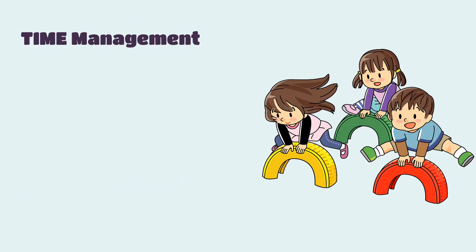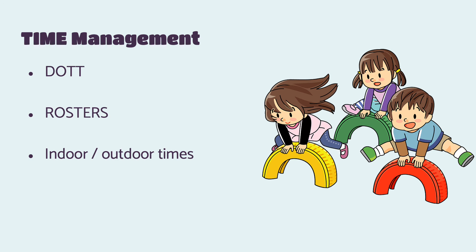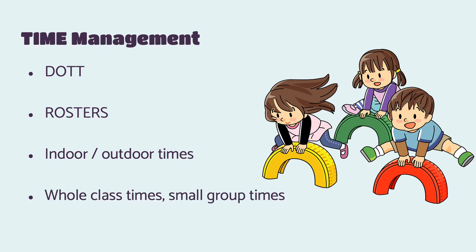When it comes to time management, you have to think — with both parents and EAs — what are you getting them to do during DOT? If it's an EA for a particular child, they might go to music with that child. If it's an EA for the class, they might be doing certain things in DOT. Duty rosters — do you include the EAs or not? That's often a school-based decision. EAs can be considered part of the adult ratios, so you need to be aware of who you're scheduling at different times. Do you want them involved during whole class time, on the mat with you, or setting up tables? And think about what you want to have happen during small group times.